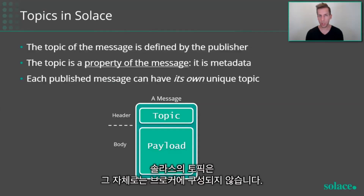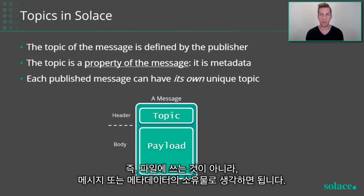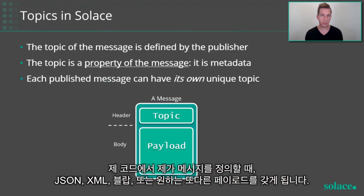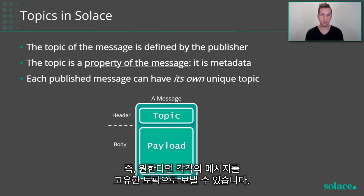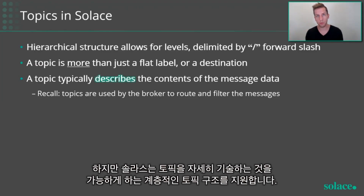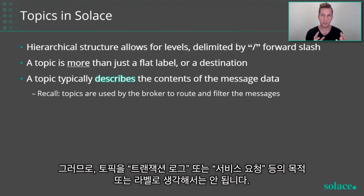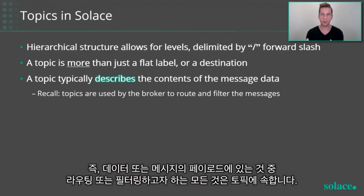So how are things different in Solace? Topics in Solace are not configured on the broker per se — they are defined by the publishing application at publish time. Think of it as a property of the message or metadata, not like writing to a file. In my code, when I define a message, I'll have a payload which can be JSON, XML, a binary blob, or whatever you want. When I send it, I send it with essentially a free text string that defines the topic, so each and every message could be going to a unique topic if you wanted. Solace supports a hierarchical topic structure that allows you to be very descriptive. Don't think of a topic as a destination or a label such as 'transaction log' or 'service request', but think of the broker doing all of the filtering and routing of messages based on topics. Anything in your data or payload that you want to route or filter on belongs in your topic.